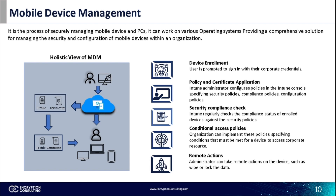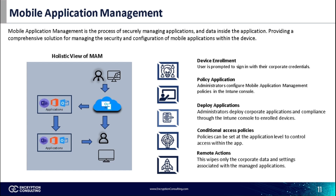With mobile device management, we set up the security guard for the device. But the question is how we manage everything inside the device — this is where mobile application management comes in, focusing on securing and protecting corporate data within the application. The process starts with device enrollment, followed by policy configuration where the administrator configures mobile application management policies in the Intune console. For example, the administrator can allow or restrict copying and pasting of data between applications. Once policies are configured, Intune allows deployment of corporate applications to enrolled devices, either pushed silently or installed by the user from the Intune company portal app.